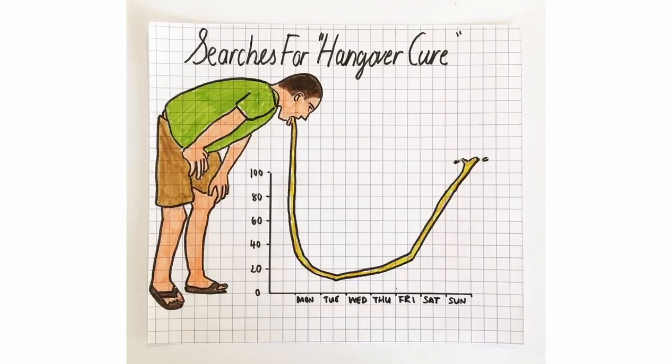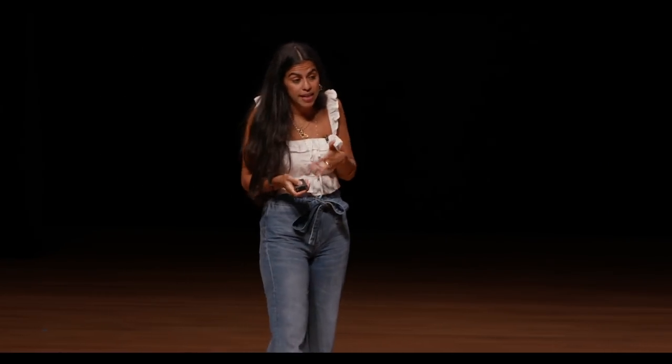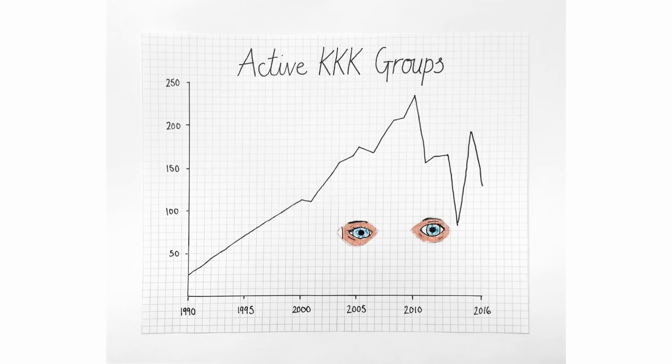And if you're talking about hangovers, you can show someone vomiting — it spikes Saturday and Sunday. I just find the search term really hilarious, like 'there is no cure.' And if you're going to be talking about the KKK, then show the KKK. I think images like this are kind of uncomfortable, and I kind of want them to make people feel a little bit uncomfortable.